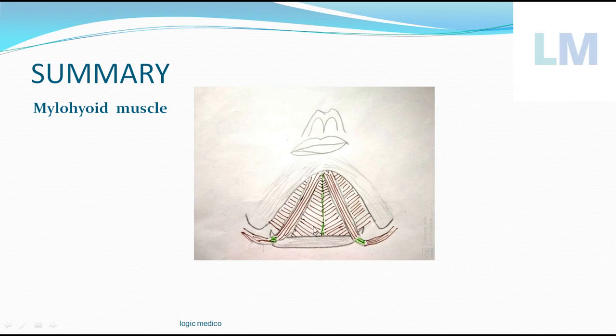Ultimately this Mylohyoid muscle either can depress the mandible down by acting from below, or when it acts from above, it can lift this Hyoid above. That is elevation of Hyoid. Also, it initiates swallowing by pushing the floor of the oral cavity upwards, thereby facilitating the deglutition or swallowing in the initial stage. Nerve supply is nerve to Mylohyoid. It is a branch of mandibular division of trigeminal nerve.